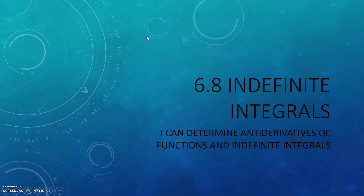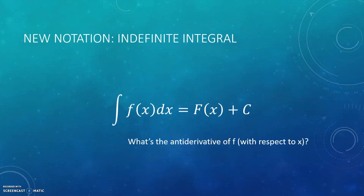This section introduces you to a new notation for the antiderivative called an indefinite integral. This section is also about the big 13 antiderivatives that you pretty much just need to know. The new notation is an indefinite integral. It looks exactly like an integral — the only difference is that you're not going to have limits of integration, so you won't have any numbers on the top or bottom. Your answer when you have an indefinite integral is the whole family of functions that have that function — the integrand — as a derivative. So it's a way of asking for the antiderivative.